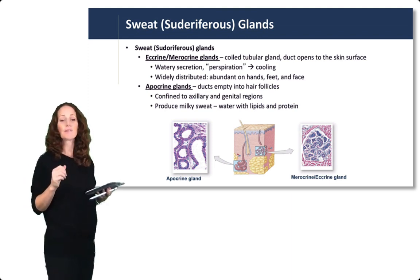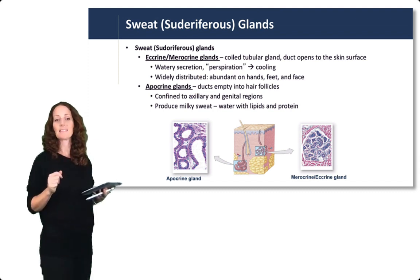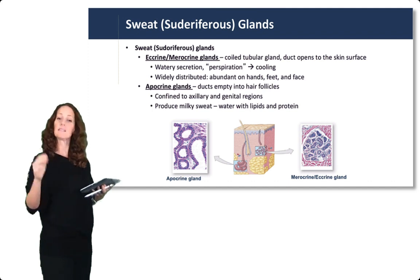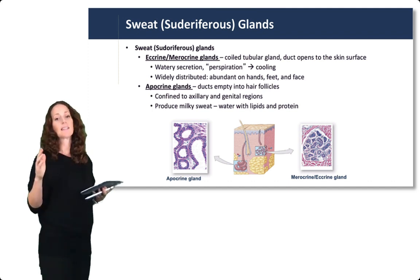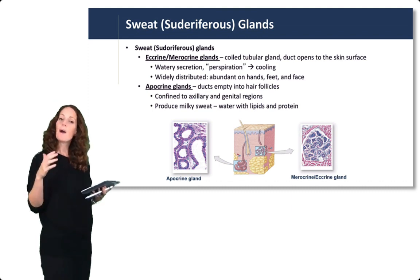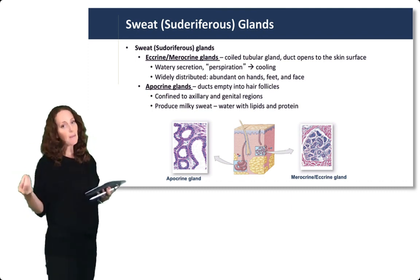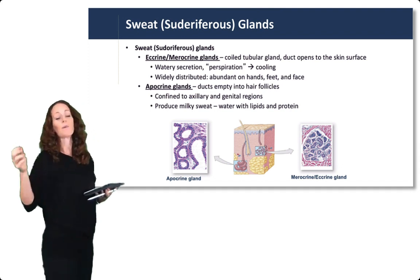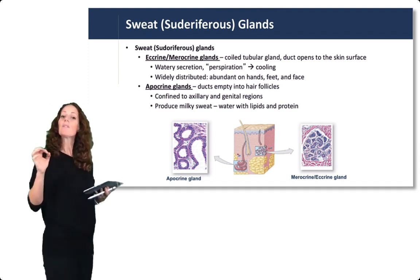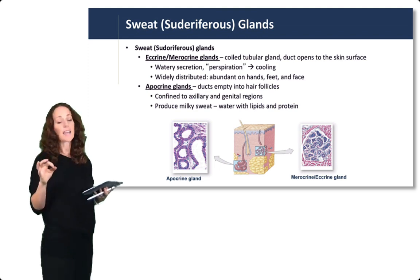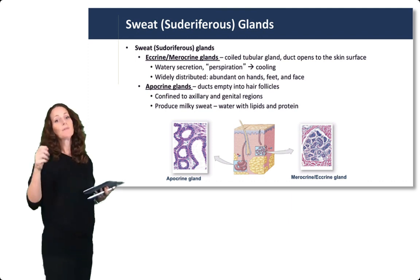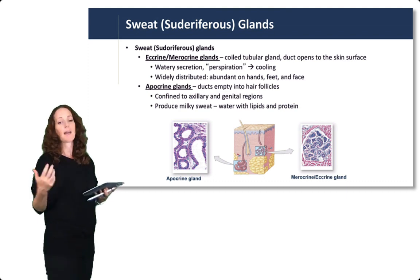Apocrine glands are also sudoriferous glands. They also have ducts, but rather than emptying onto the skin surface, their ducts empty onto hair follicles. The difference between apocrine glands and sebaceous glands is in their location: apocrine glands are confined to the axillary armpit and genital regions. They produce a milky sweat composed mainly of water with lipids and proteins.